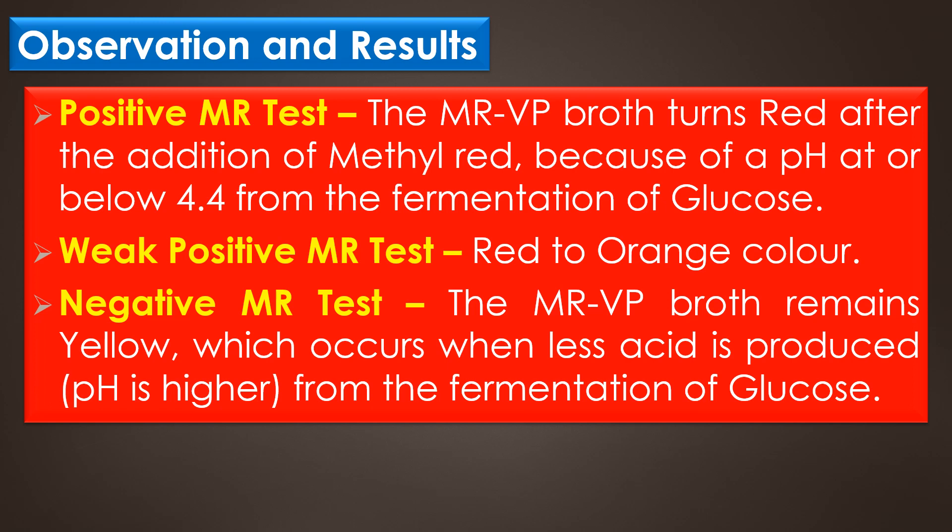Observation and results: In a positive methyl red test, the MRVP broth turns red after the addition of methyl red, because of a pH at or below 4.4 from the fermentation of glucose. In a weak positive MR test, a red to orange color is observed. In a negative MR test, the MRVP broth remains yellow, which occurs when less acid is produced, that is, the pH is higher from the fermentation of glucose.